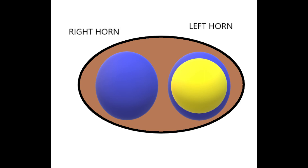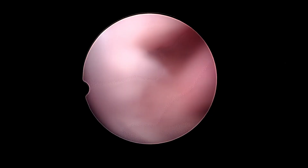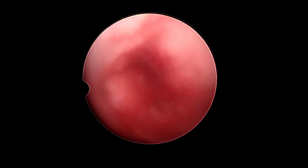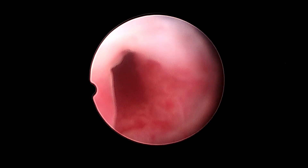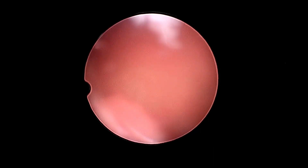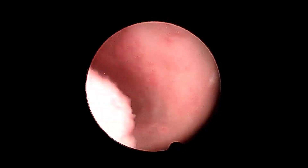So hence we put a Foley's balloon in one horn and do the hysteroscopic resection of the septum above the internal os. Now we are doing hysteroscopy before any surgical correction, and as you can see we are entering by vaginoscopic approach into the right side of the cervix. Once you negotiate the internal os, you realize that you have entered into the cavity of the uterus.